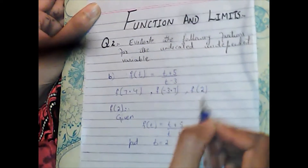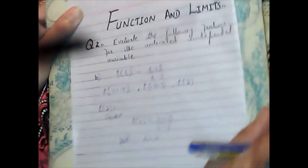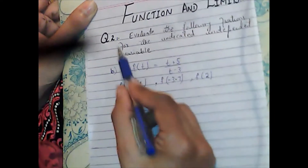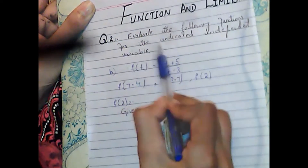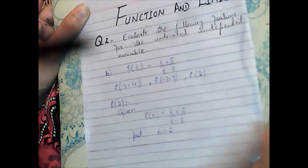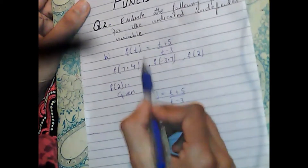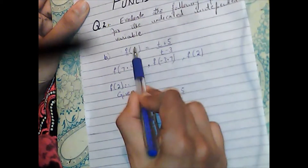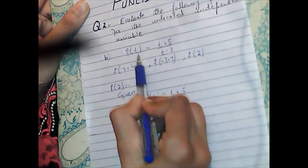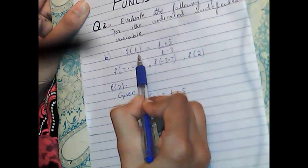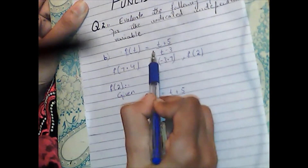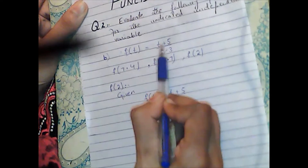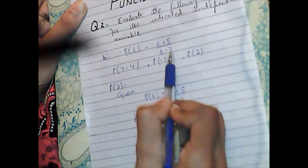We have three other parts. For question number 2, we evaluate the following functions for the indicated independent variables. I told you yesterday that for the given function — question number 2 — we have f(t) = (t + 5) / (t - 3).